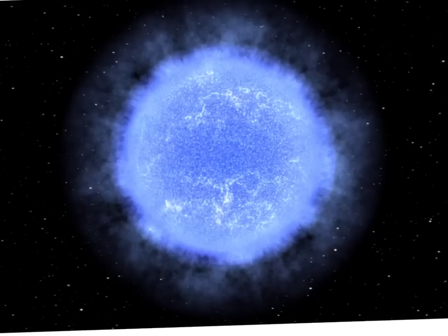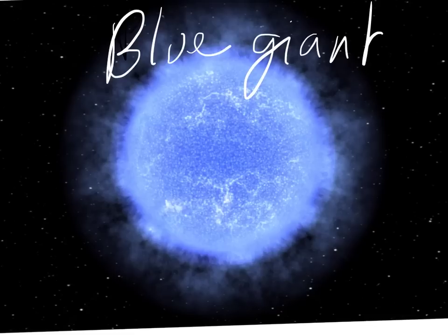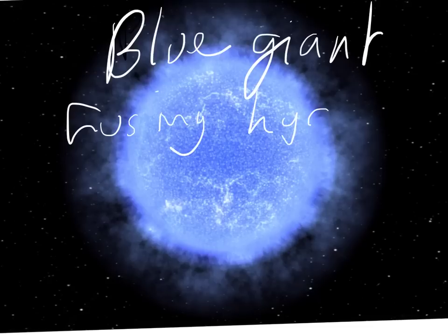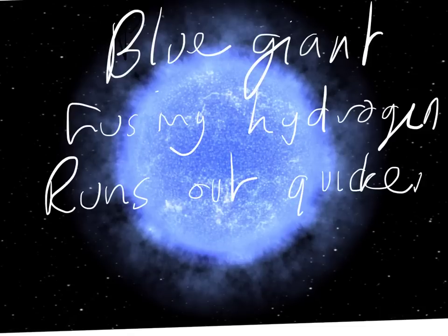For more massive stars, the first stage is the same — a stellar nebula becomes a protostar. But once fusion begins, the star becomes what we know as a blue giant. It's called a blue giant because it is giant and it is blue. It is similar to our Sun and other main sequence stars in that it fuses hydrogen, but because it's so big, it runs out of fuel much quicker, so its life is much shorter than our Sun or smaller stars.